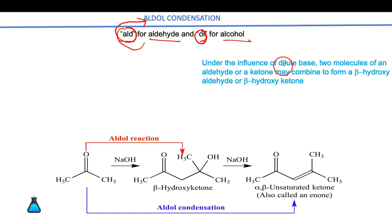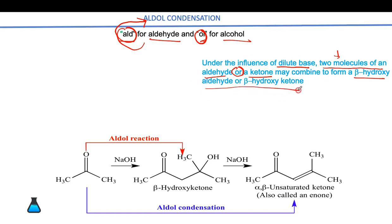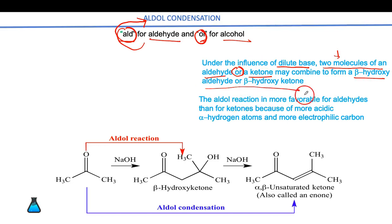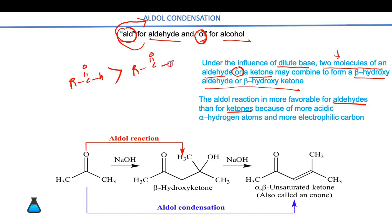Under the influence of dilute base, two molecules of aldehyde or ketone combine to form beta-hydroxy aldehyde, and this reaction is known as aldol condensation. The aldol reaction is more favorable for aldehyde because of less steric hindrance and more acidic alpha-hydrogen than ketone. Always remember the rate of reaction of aldehyde is higher compared to ketone in aldol condensation.